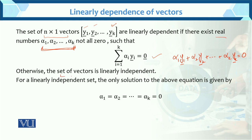Otherwise, the set of vectors is linearly independent. For a linearly independent set, the only solution to the above equation is alpha 1, alpha 2, up to alpha k equals to 0. In the independent case, there is only one solution. In the dependent case, there is not only one solution — other solutions can exist.